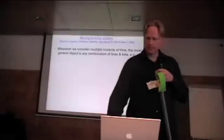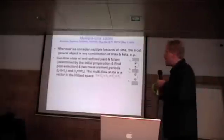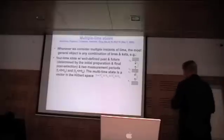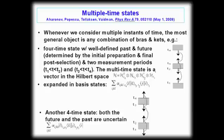Okay, so the basic idea of this root formulation is the point that whenever we talk about multiple instance of time, you can prove that the description is given by the description of the state of that system is given by a combination of bras and kets. So here's an example of a four-time state. And it has a well-defined past and a well-defined future. And it's this combination of states in the Hilbert space. And what we're then going to do is make measurements, multiple-time measurements in those, for example, in those two times.